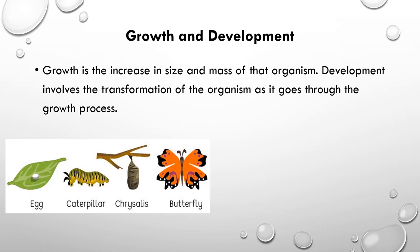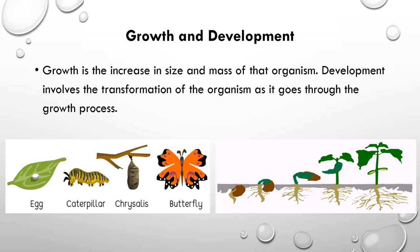The growth and development of the butterfly takes place in different stages. Similarly, if you consider the growth and development of a plant, it also shows different stages. The growth of a plant starts from a seed and, after passing through different stages of its life cycle, it produces a large tree.